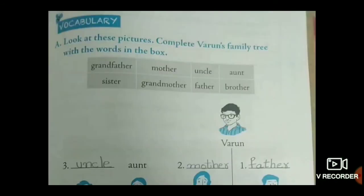Good morning children. In today's session we shall learn gender nouns and past tense from the workbook. Open page 43 and look at these pictures. Complete Varun's family tree with the words in the box. Here we can see Varun's family tree. Some words are given in the box: grandfather, sister, mother, grandmother, uncle, father, aunt, brother.